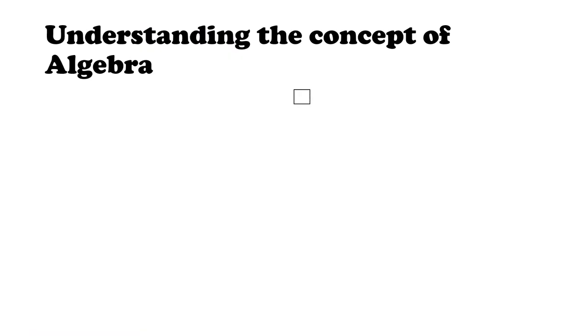So let's first understand the concept. Algebra is something that we've been introduced to very early. In a primary school or primary institution, this might be one of the first signs in which we are introduced to algebra. We see: 8 plus a box — that's what we call it here in Grenada. You have a box and that's equal to 10. Sadly, they don't teach us any algebra strategy to solve this. At the primary level this is more of a guessing game — 8 plus what would give you 10.